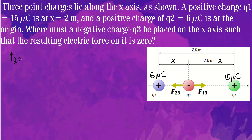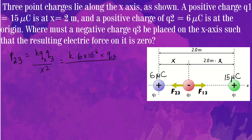Let us find F23. F23 equals k times q2 times q3 divided by x squared. That is k times 6 microcoulombs (6 × 10⁻⁶) times q3, divided by x squared.